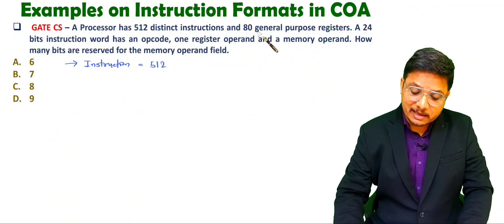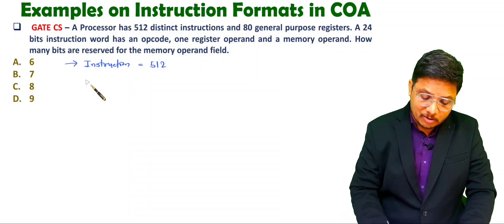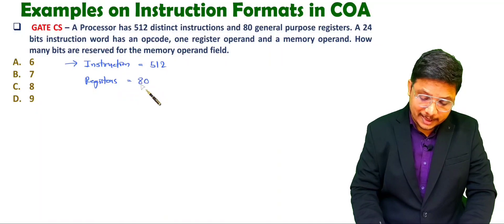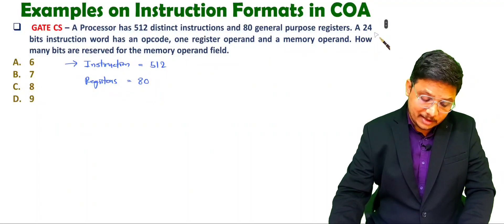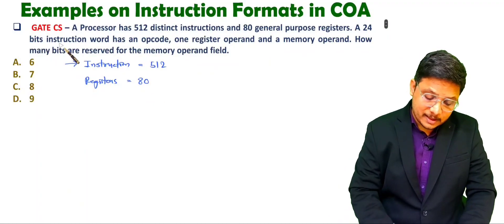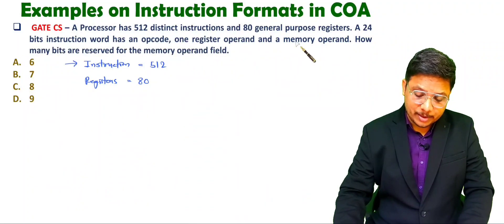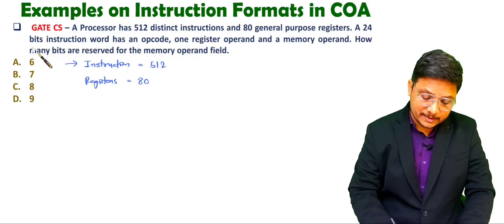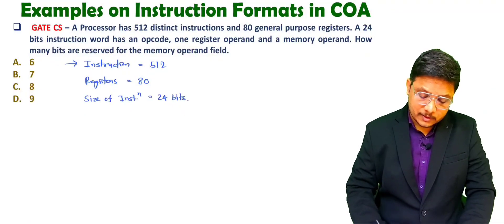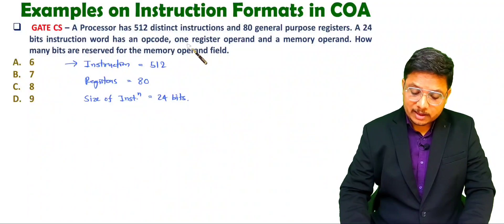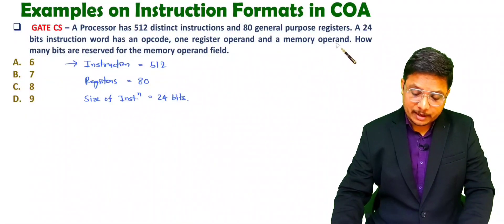And there are 80 general purpose registers. A 24-bit instruction word has an opcode, one register operand, and one memory operand. So the size of instruction is 24 bits. This instruction is having an opcode, one register operand, and one memory operand.